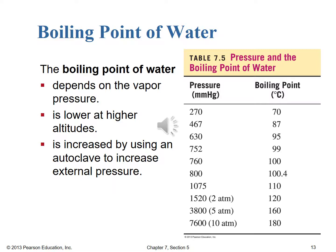The boiling point is also increased by using an autoclave, which increases external pressure to kill microorganisms. If you're going into the health professions, you may encounter an autoclave, which raises the boiling point of water through increased external pressure. Similarly, a pressure cooker cooks food faster by cooking at a higher temperature, altering the boiling point of water through a pressurized container.